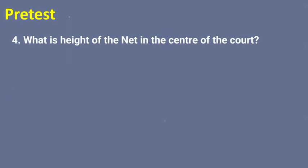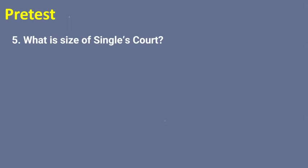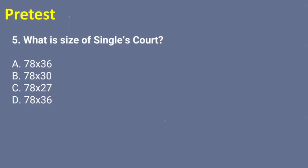Number four: what is the height of the net in the center of the court? A — 3 feet, B — 3.6 feet, C — 3.3 feet, or D — 2.5 feet. The height of the net in the center of the court is 3 feet, letter A. Number five: what is the size of the single court? A — 78 by 36, B — 78 by 30, C — 78 by 27, or D — 78 by 36. The size of a single court is 78 by 27.